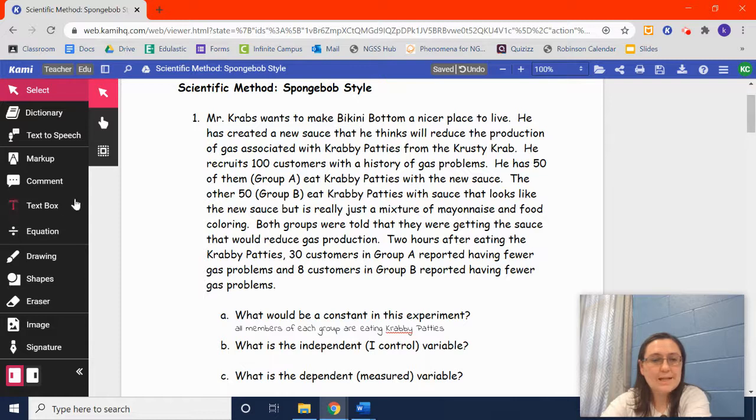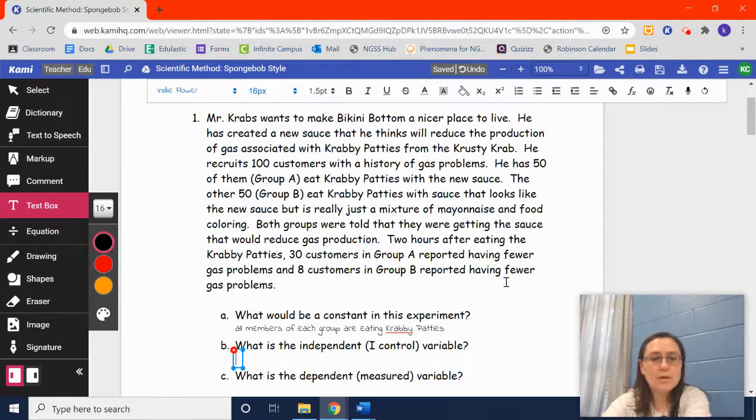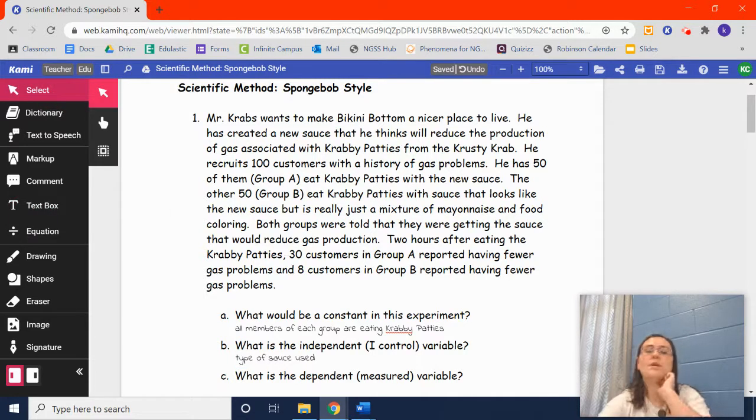B, what is the independent or eye control variable? So, what did Mr. Krabs do? What was the difference in Group A's Krabby Patties and Group B's Krabby Patties? It was the type of sauce. Remember, both groups got a sauce and were told that it was the new sauce. But only one group actually had the new sauce, Group A. Group B actually just had, it's called a placebo. Group B thought it was the actual thing, but it's actually just a made-up thing. It's the fake sauce. So, he was in control of the type of sauce he used.